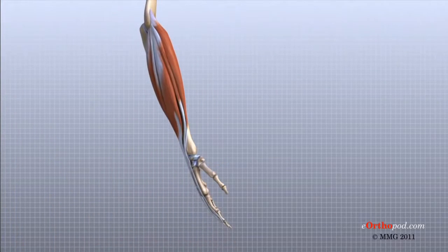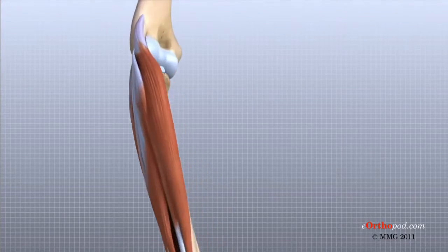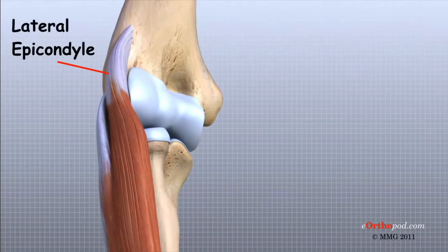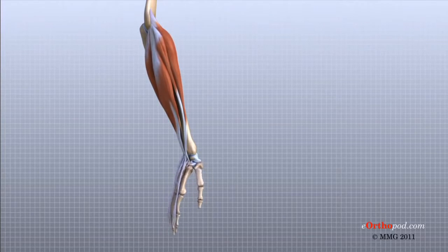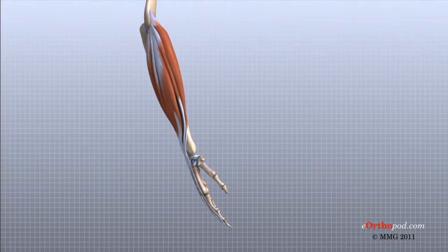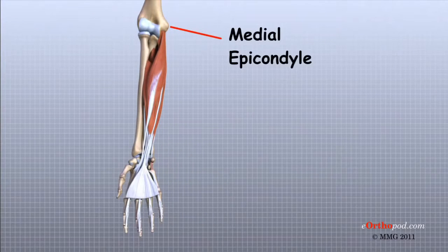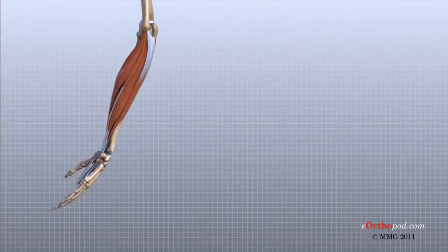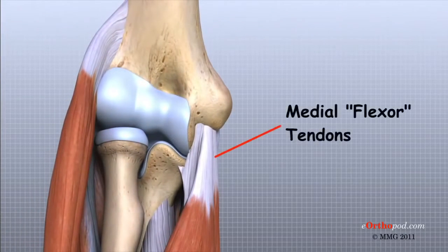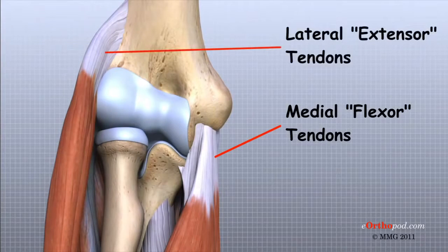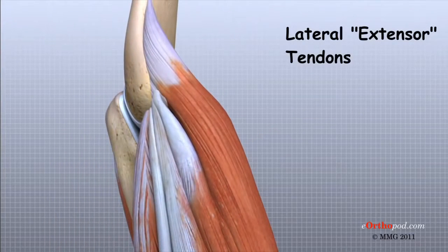The muscles of the forearm cross the elbow and attach to the humerus. The outside or lateral bump just above the elbow is called the lateral epicondyle. Most of the muscles that straighten the fingers and wrist all come together in one tendon to attach in this area. These tendons are important because they are a common location of pain caused by a condition called tendinitis, or perhaps more accurately, tendinosis.